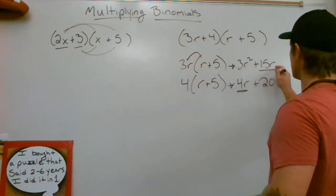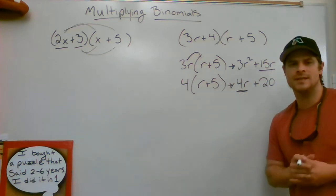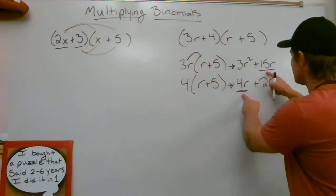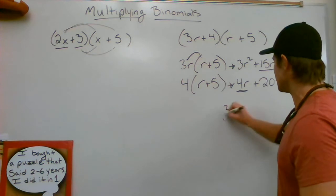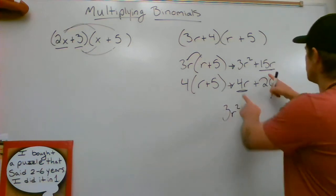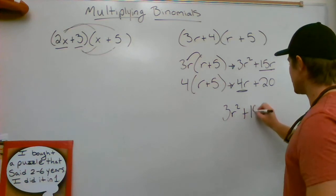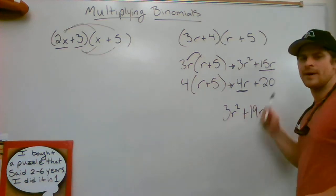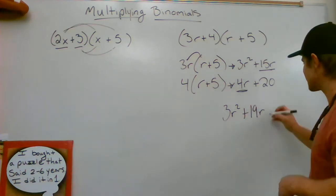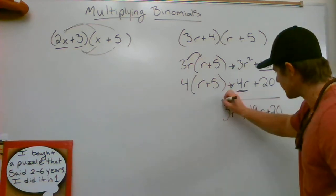These two terms are like terms, so they need to be combined. They're both positives, so the grand total would be 15 and 4, which makes positive 19r. And that positive 20 is the only constant, so it stays positive 20. Again we are left with a trinomial—three terms—with our highest exponent being 2, then 1, and then a constant.